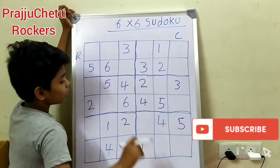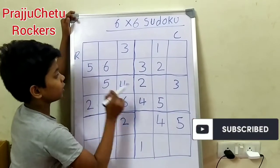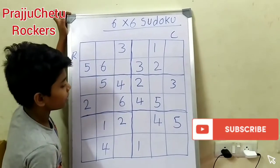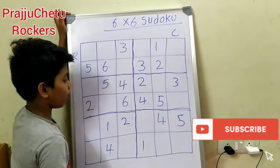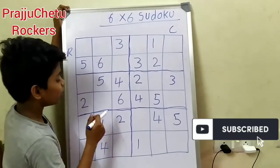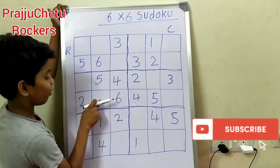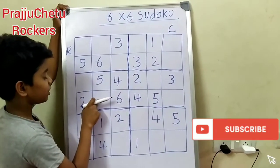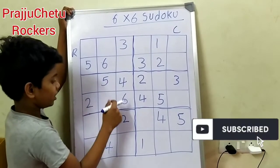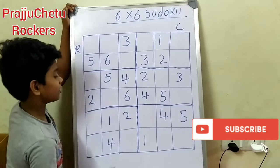So let's start solving this Sudoku puzzle. First, we need to select the most information box — meaning which house has the most clues to solve. Let's select this box first, as it has the most information with four numbers.